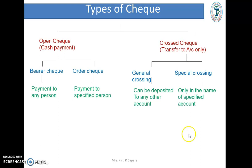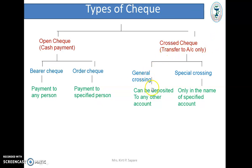Types of Checks. Checks are mainly of two types: Open Check and Cross Check. Open checks are for cash payment; cross checks are for account transfer only. Open checks are of two types: Bearer Check — payment to any person — and Order Check — payment to the specified person whose name is mentioned. Cross checks are of two types: General Crossing — where the check can be deposited to any bank account — and Special Crossing — where the check is deposited only in the bank whose name is specified between the crossing lines.